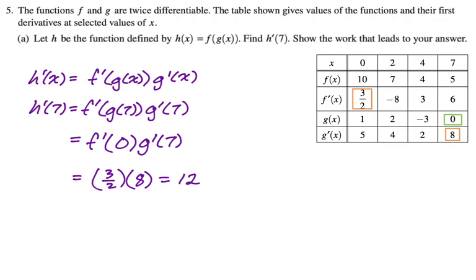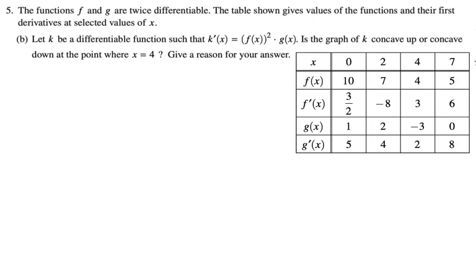All right, next part. Let k be a differentiable function such that k'(x) = (f(x))^2 * g(x). Is the graph of k concave up or concave down at the point where x = 4? Give a reason. All right, so we're going to use the product rule in combination with the chain rule here.